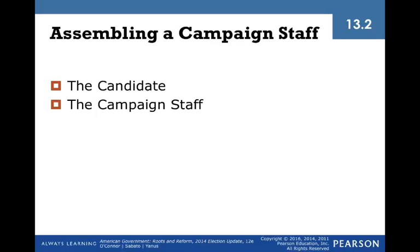The first thing a candidate has to do when they declare for office is assemble a campaign staff — a group of people who will help run their campaign because they can't do it all by themselves. Candidates may be the center of political campaigns, but much of the decision-making and work is done by trusted advisors and campaign staff, and increasingly these campaign staff are paid, hired political professionals that do it for a living.